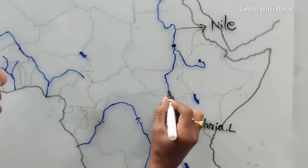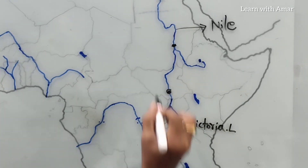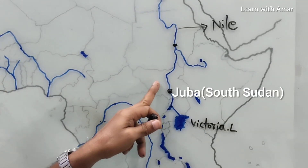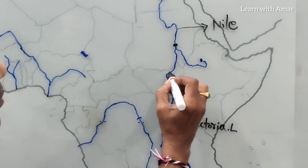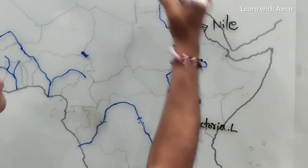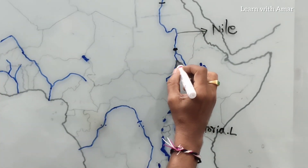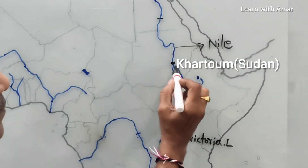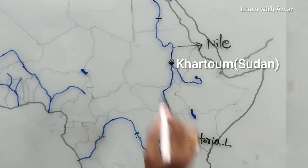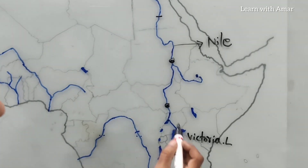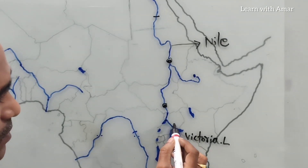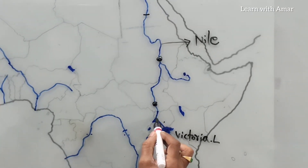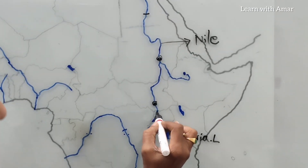It goes through Juba, the capital city of South Sudan, and moves upward from south to north. It flows here and at Khartoum, the capital city of Sudan. From Lake Victoria it is known as Victoria Nile. From Lake Albert it is called White Nile.